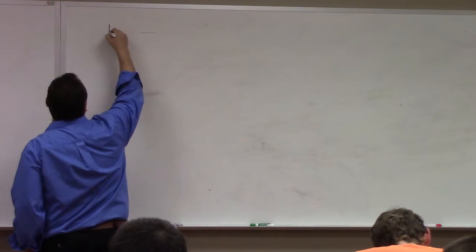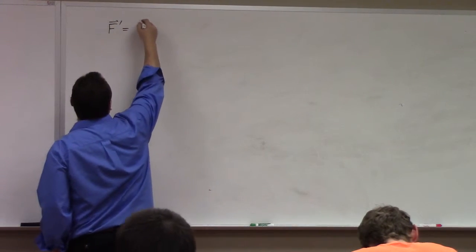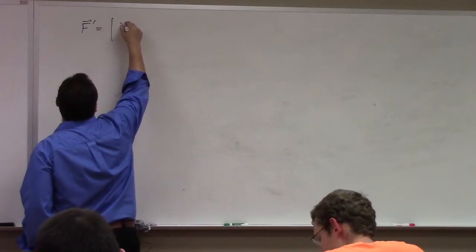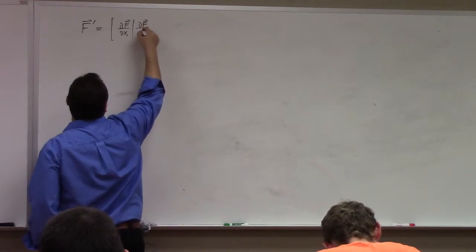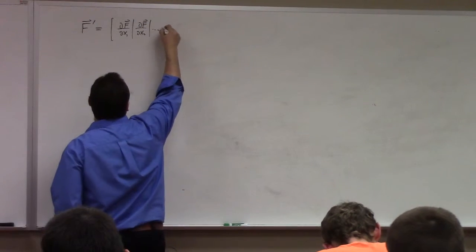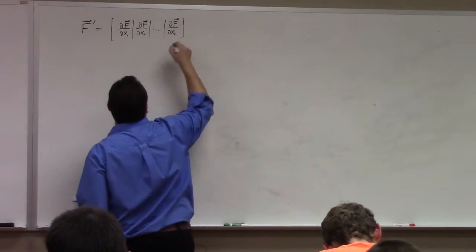So f prime, here's what it looks like though. F prime, the matrix is actually this. It's partial f, partial x1, partial f, partial x2, partial f, partial xn. This is the Jacobian matrix.